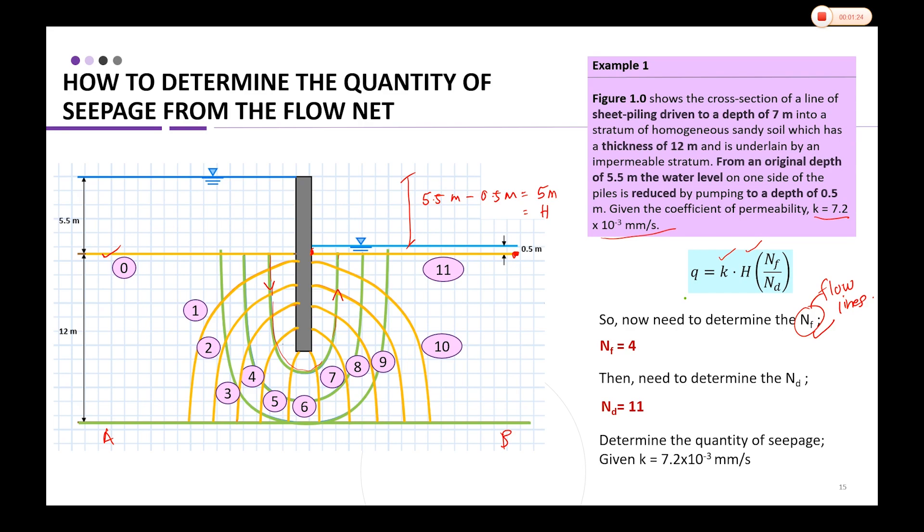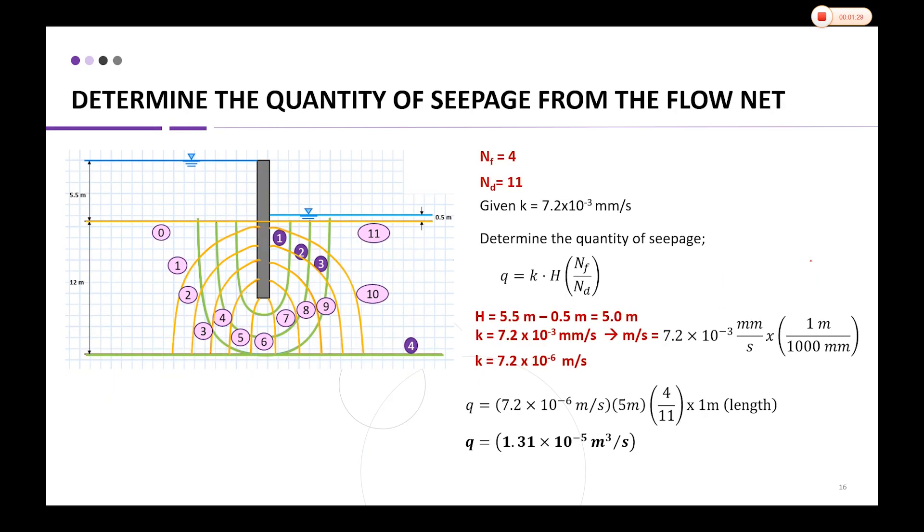Now we have all the data, including Nf and Nd, so we can calculate the seepage. Given k is in millimeters per second, and since all parameters are in meters, we convert k from mm/s to m/s.